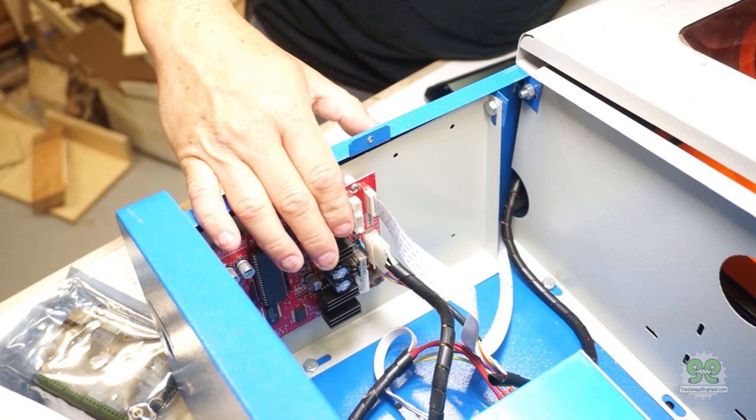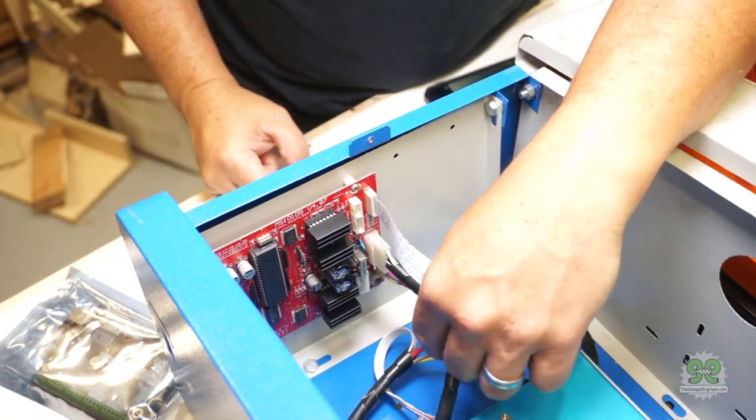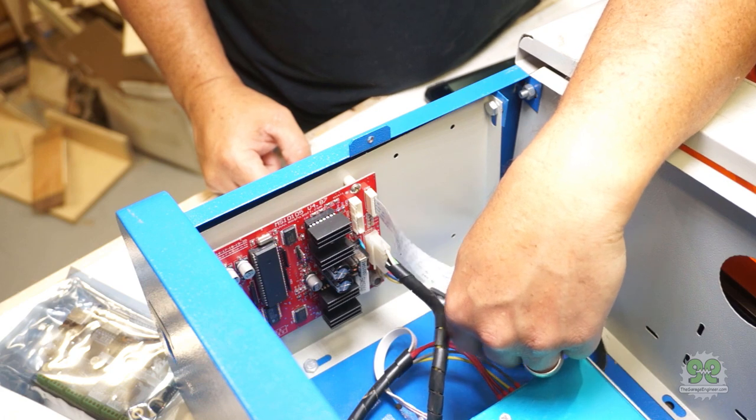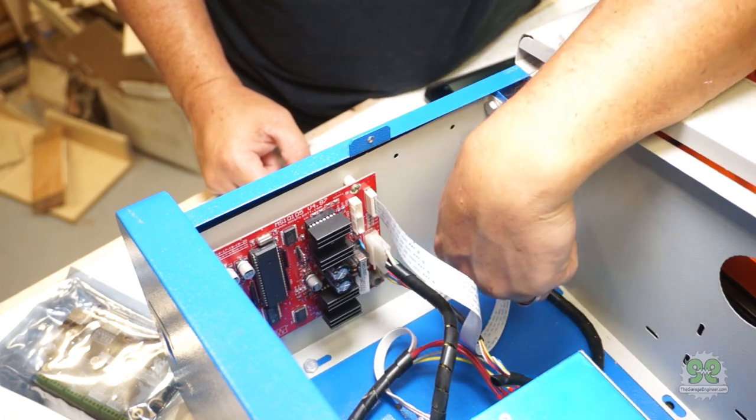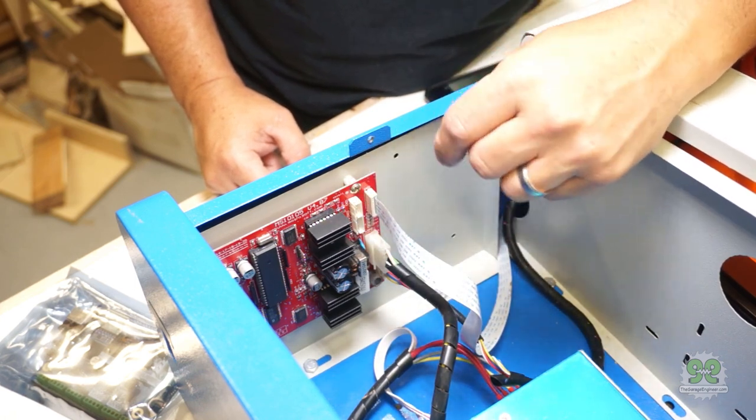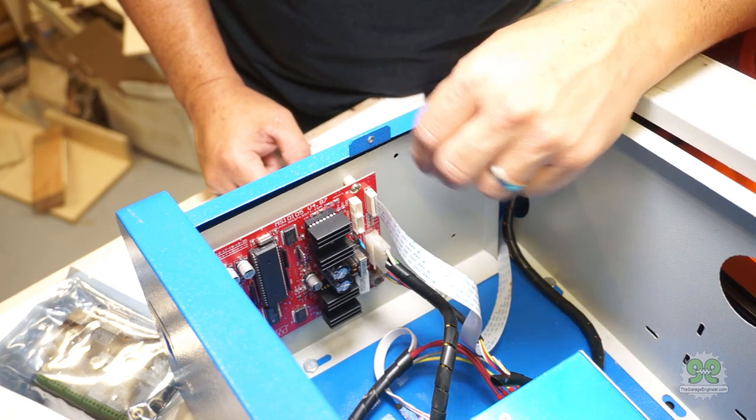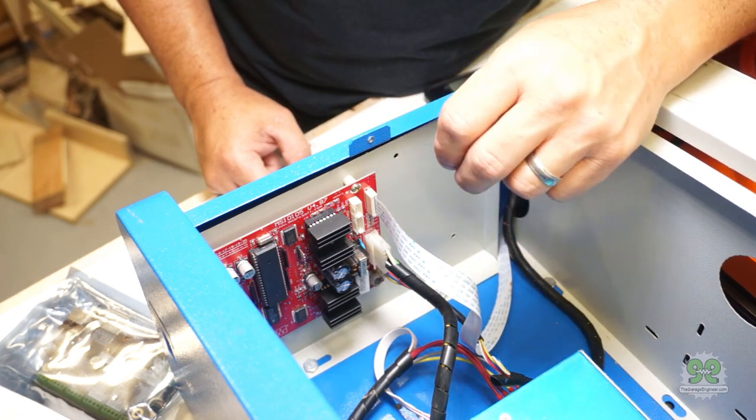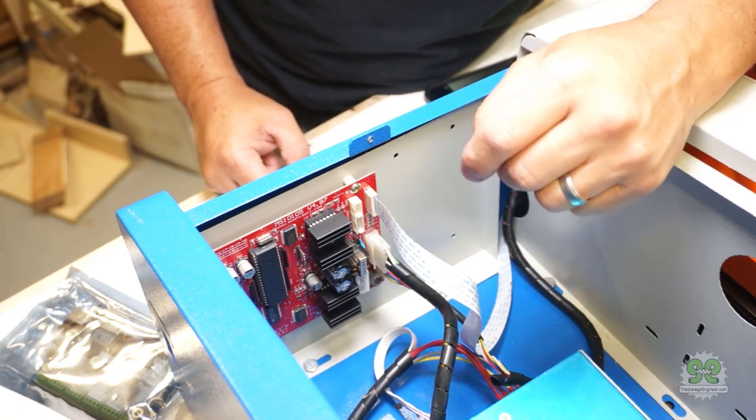So here's the Moshi board. I'm gonna disconnect the three sets of wires that connect the board, and then we'll take the board and the metal plate that holds the board because we're gonna have to re-drill some holes because the Cohesion 3D board is a little bit smaller, so we're gonna have to make our own mounting holes for it.